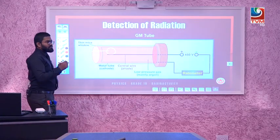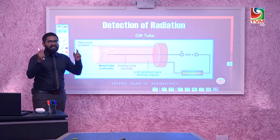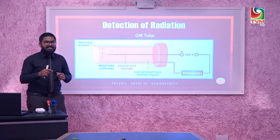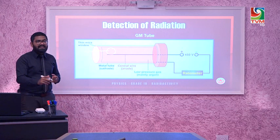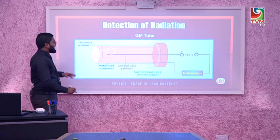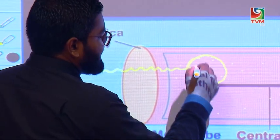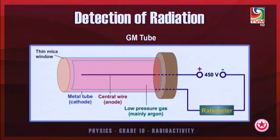Similar to electrolysis in chemistry where electrodes in an electrolyte cause electron and ion movement to produce current, the ionization between the anode and cathode creates an ion flow inside the GM tube. The whole circuit is incomplete, but due to the ionization inside the GM tube, the rate meter starts to give out a reading.